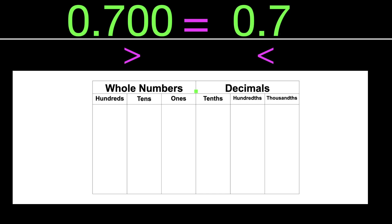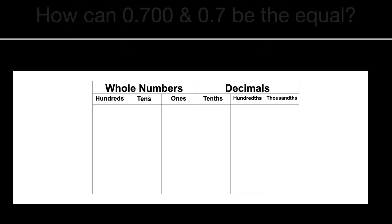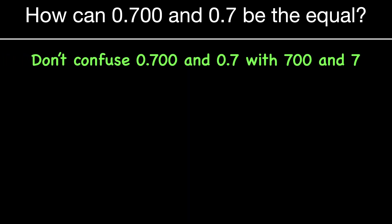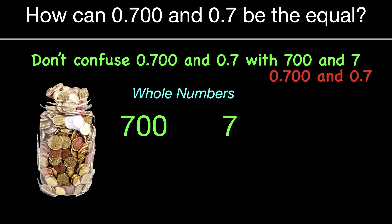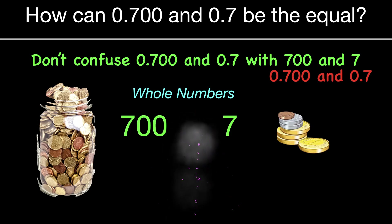How can 700 be equal to seven? Let's look at three reasons. First, you don't want to confuse your decimal numbers with your whole numbers. Seven hundred thousandths and seven tenths are decimal numbers. If we compare those with the whole numbers seven hundred and seven, even though they look similar, they're really different. Seven hundred coins would fill a jar or two, whereas seven coins would just be a few — they are not equal as whole numbers. Seven hundred is definitely greater than seven as whole numbers. But whole numbers go on the left side of the decimal point, and today we're dealing with decimal numbers.